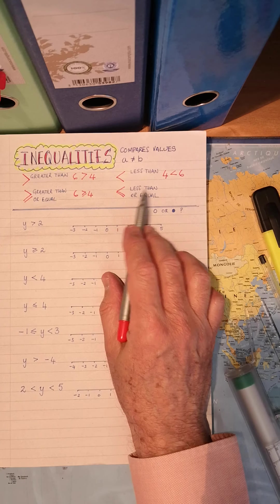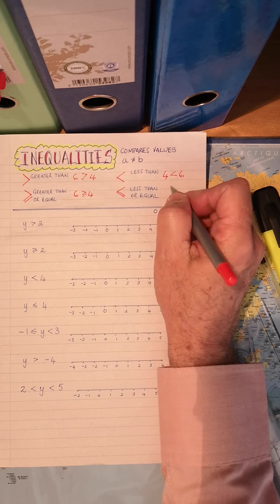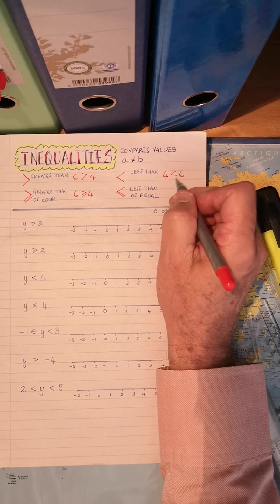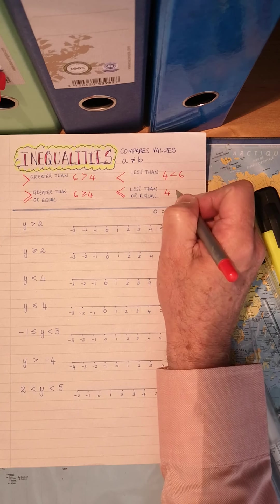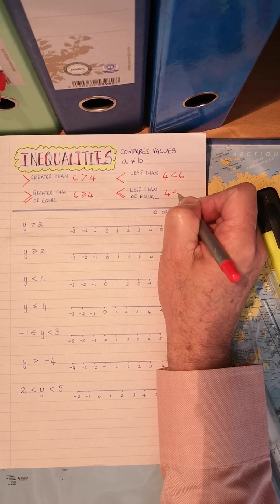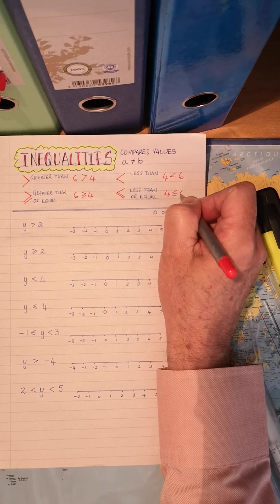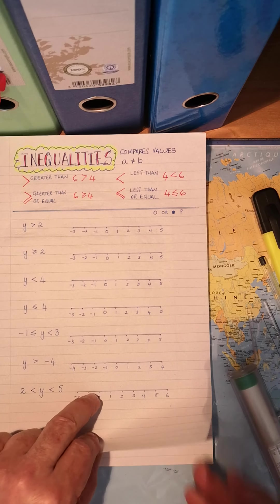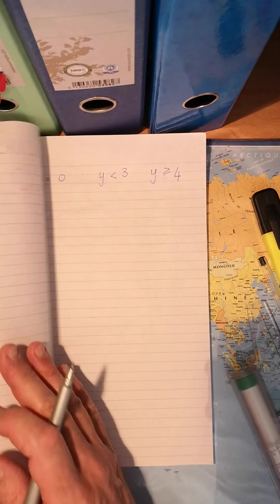And this one less than or equal to, again, that would be what? Four is less than or equal to six. Okay. Before we go any further, let's just turn a page quickly, and I'll come back to this page.